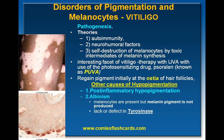As you can see on the left, there is a picture showing vitiligo with the hypopigmented spots. In terms of the pathogenesis, there is autoimmunity, neural-humoral factors, as well as self-destruction of melanocytes by toxic intermediates of melanin synthesis.